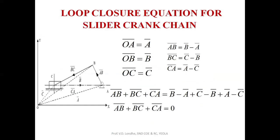Next is the loop closure equation for the slider crank chain mechanism. This is also a planar mechanism where point A is the fixed point, AB is the crank, BC is the connecting rod, and C is the slider, which is the piston. The vectors AB bar plus BC bar plus CA bar form a cycle, and their summation is equal to zero.